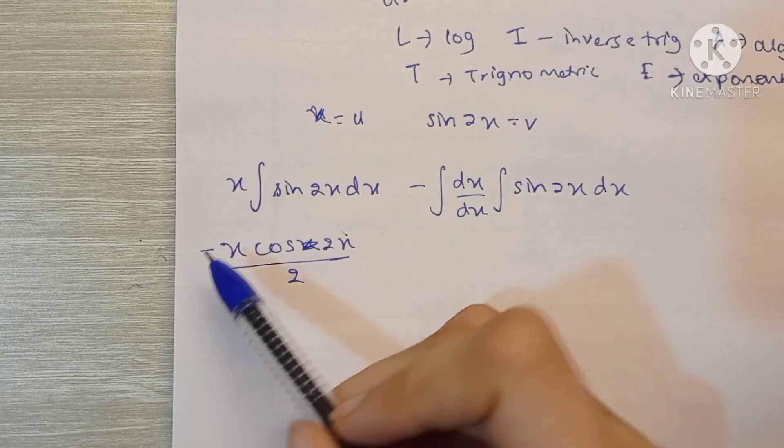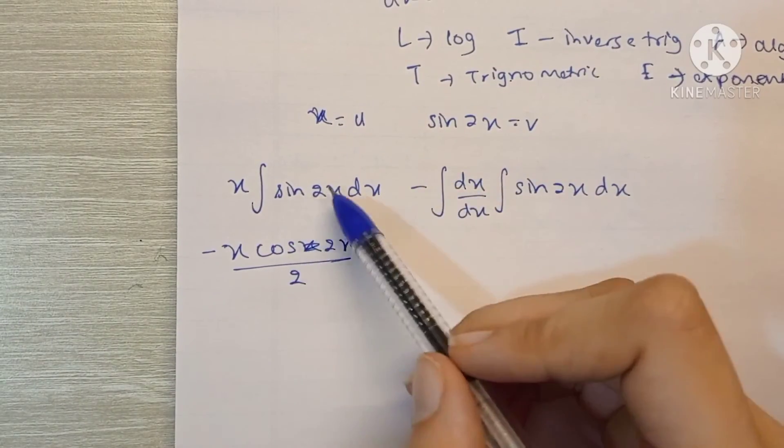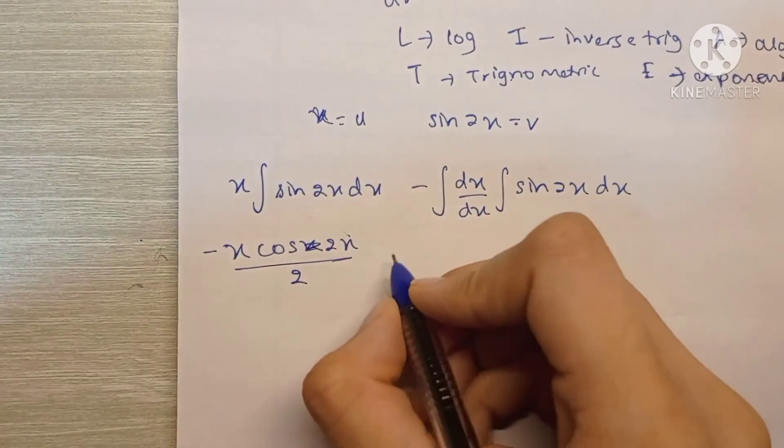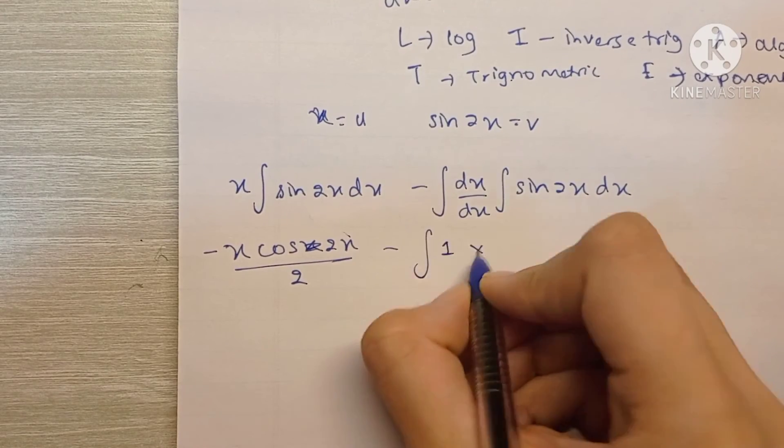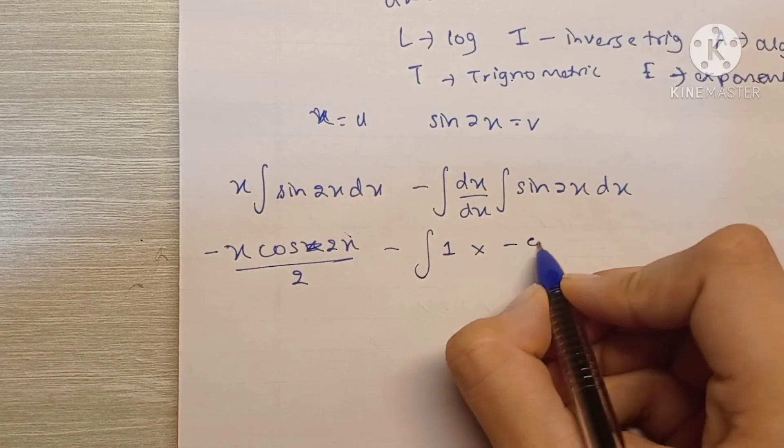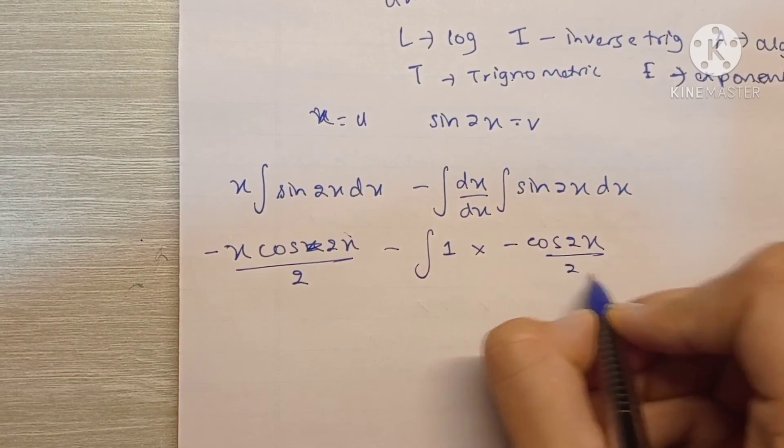And we will be left with just sin 2x. And we have minus also, the minus of minus will become plus, so we will be left with just sin 2x. Minus integration of 1 into, same thing again, minus cos 2x upon 2 dx.